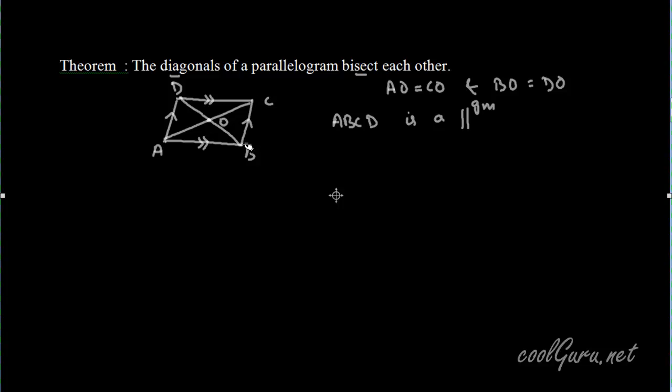Now CD and AB are parallel lines and BD is transversal. Then we can say that angle CDO is equal to angle ABO because these are a pair of alternate angles.